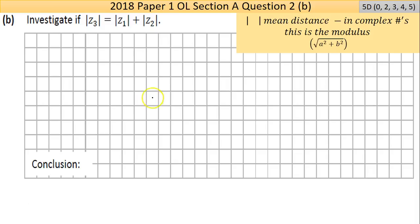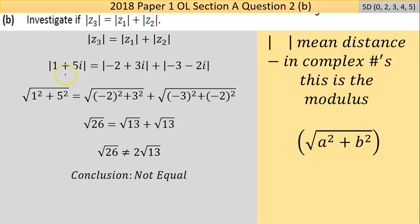Now part B here, we're asked to investigate if Z3 - and those bars mean the length of - so is the length of Z3 equal to the length of Z1 plus Z2? So we're asked to find the modulus three times here. We just found Z3. Now let's say in part A you couldn't find Z3 for some reason, just make up an answer in part A and declare it, and then that's acceptable for use in all future parts. The formula for modulus is given here. It's basically a remix of Pythagoras's theorem, and you have the square root of a² + b².